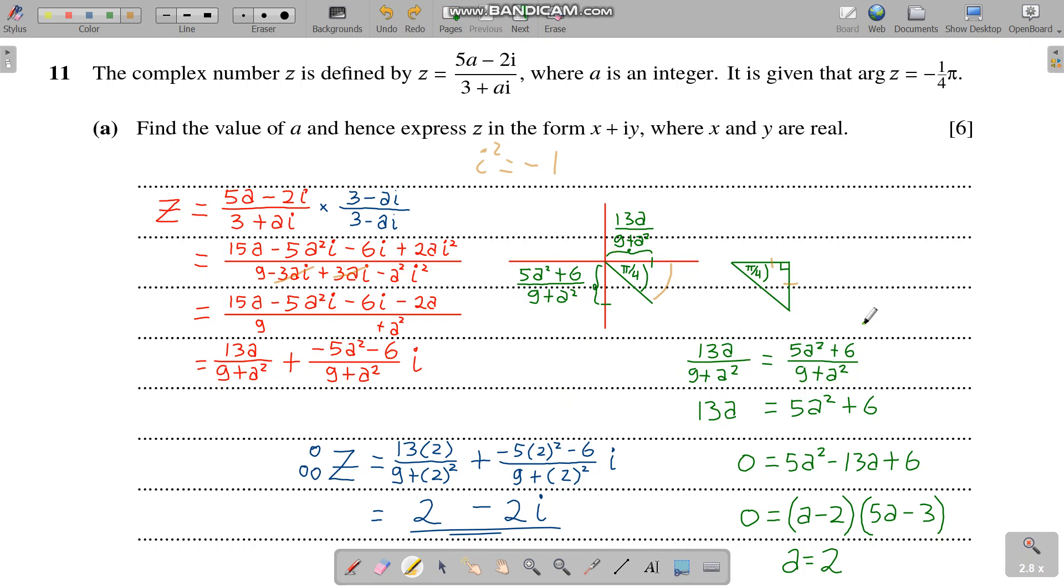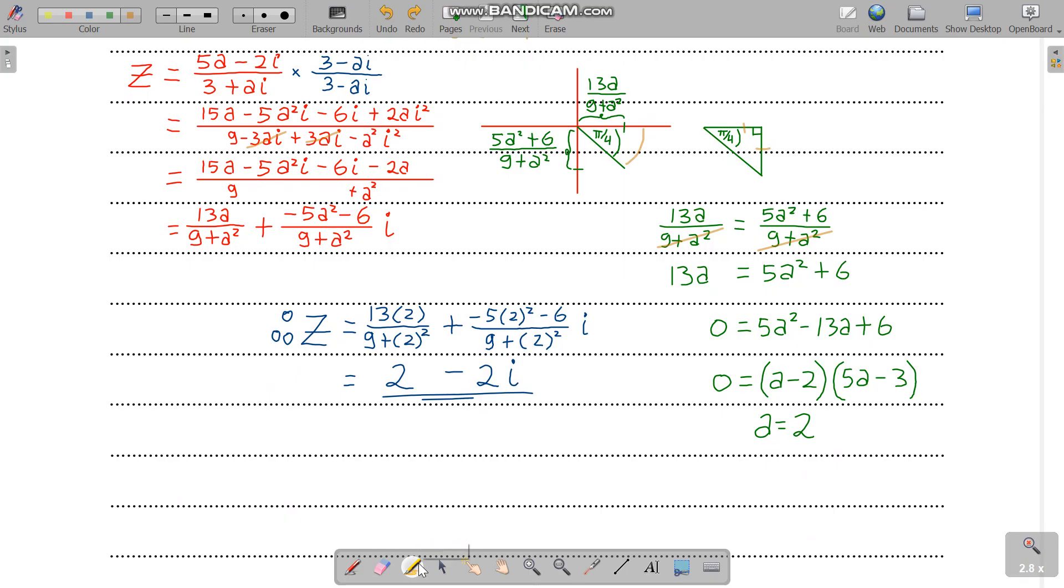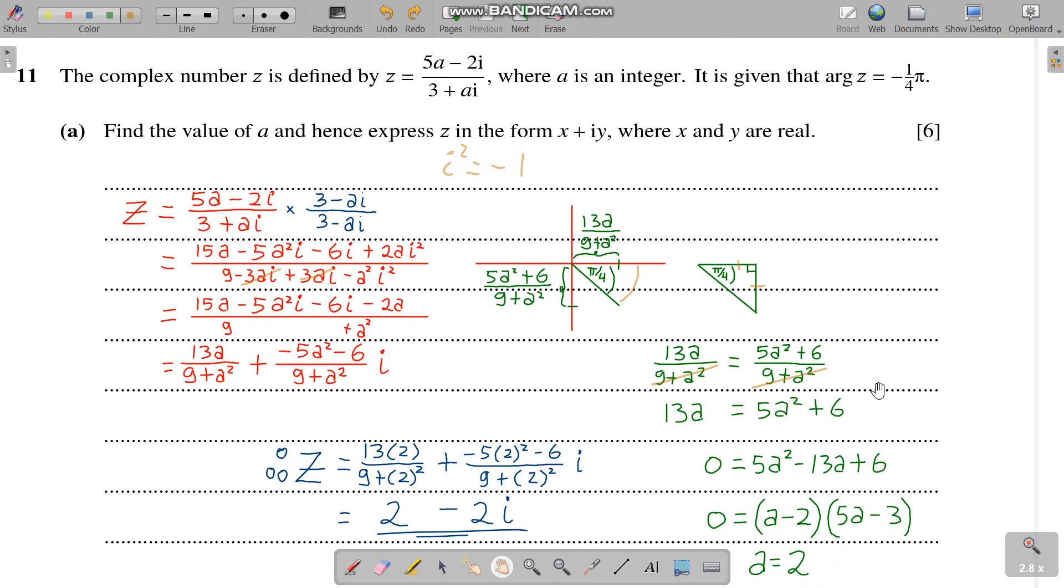So since it's isosceles, we can multiply both sides and cancel out, so we have a simple quadratic. You can factorize and solve for a. Here we have a equals 2 or a equals 3/5. But in the question a is an integer, so a must be 2.